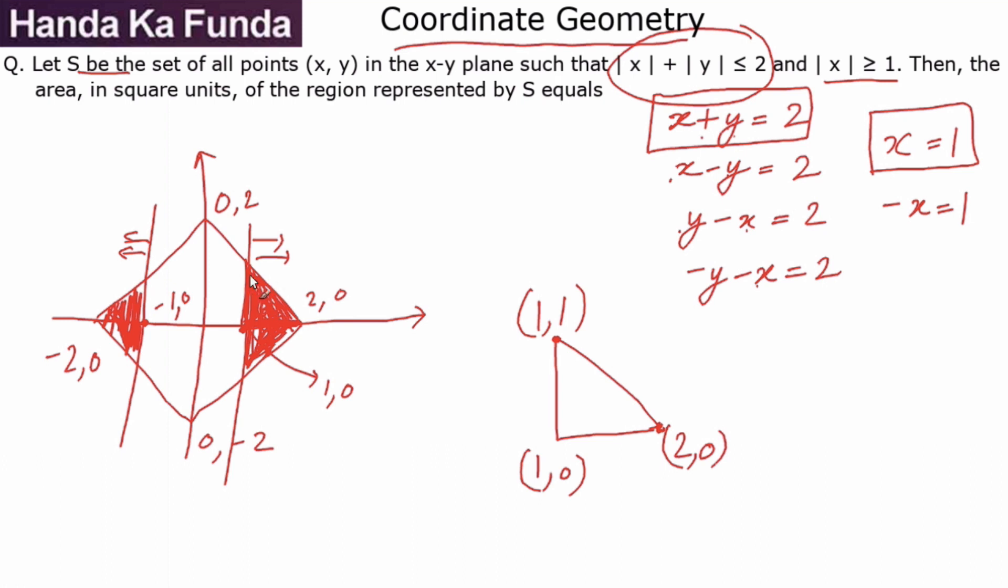So this is just one quarter of the shaded region. What is the area of this? Half of base into height: base is 1, height is 1, so the area is ½ × 1 × 1, or the area of this particular part is 0.5.